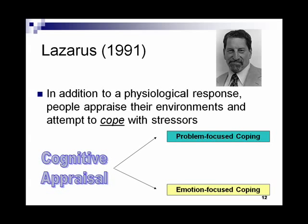Problem-focused coping focuses on the individual tackling the problem directly at hand, while emotion-focused coping focuses on the individual taking an emotional reaction to dealing with stress. For example, if someone loses their job, a problem-focused coper gets out the want ads and directly tries to find work. An emotion-focused coper instead talks with others about how bad they feel and may become very emotional and break down.